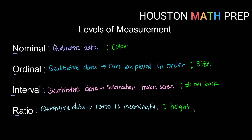The other thing to note with interval and ratio that can help in determining the difference is how zero plays a role. In interval level data, zero is just a placeholder — it does not mean the absence of something; it doesn't mean you have zero of that item. Versus in the ratio level, zero is an absence of something; it's an actual measure. So being zero years old means you were just born.